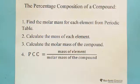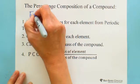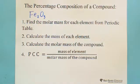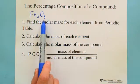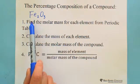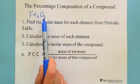The percentage composition of a compound means we're looking for the percentage of each element in a compound. For example, Fe2O3 — this is iron oxide. In this compound, there are two elements: one is iron (Fe), the other is oxygen. There are two moles of iron and three moles of oxygen.